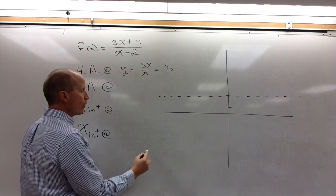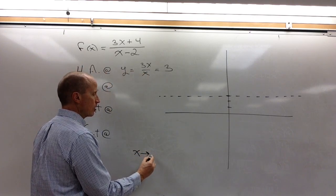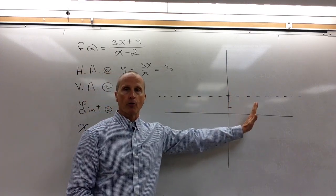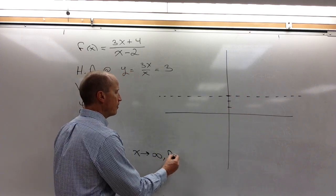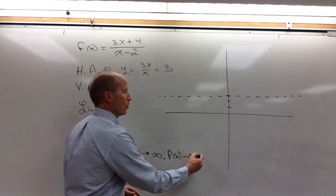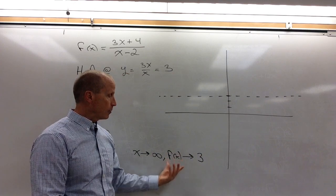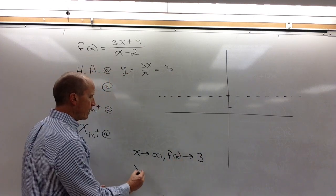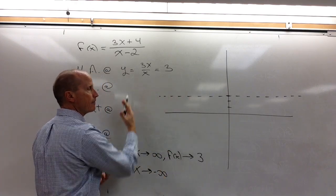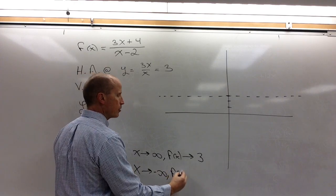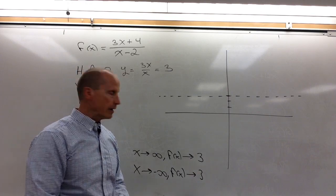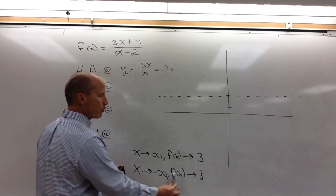We could write the end behavior as: as x approaches infinity — describing the right part of the graph — my function will be approaching the value y = 3. And likewise, as x approaches negative infinity — describing the left part of the graph — my function value is approaching 3, because both sides are approaching that horizontal line.